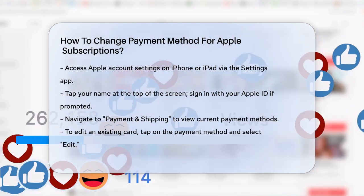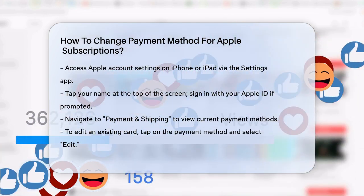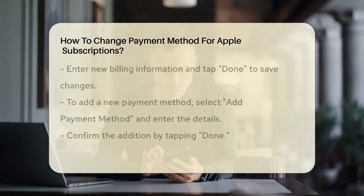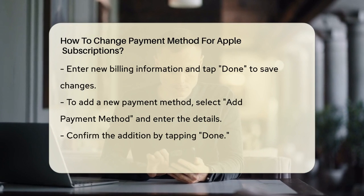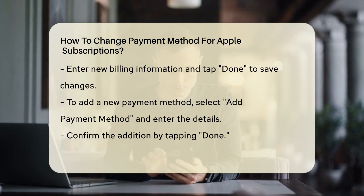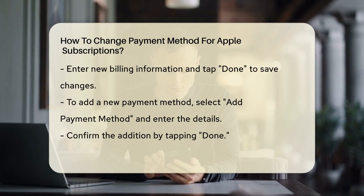Here you'll see all your current payment methods listed. If you need to update the billing information of an existing card, tap on the payment method, then tap Edit. Enter your new billing information and tap Done to save the changes.